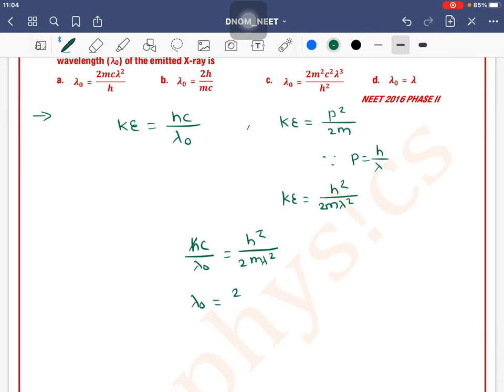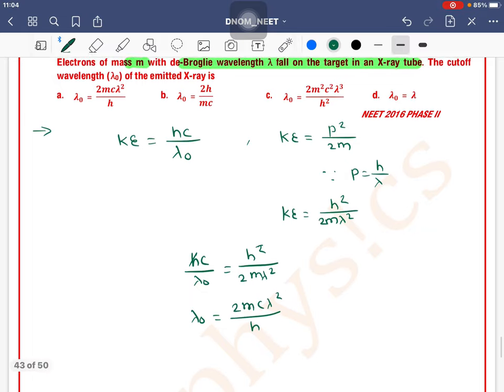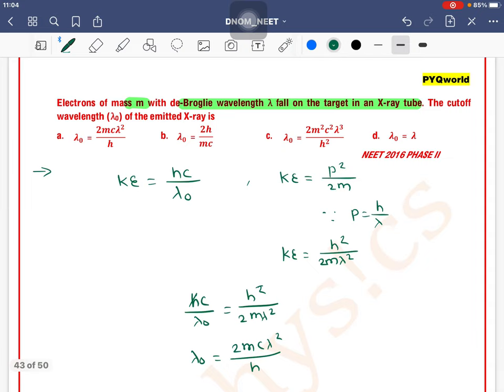Lambda naught can be written as 2mc lambda squared divided by h. So lambda naught equals 2mc lambda squared divided by h, which means option a is the correct one.